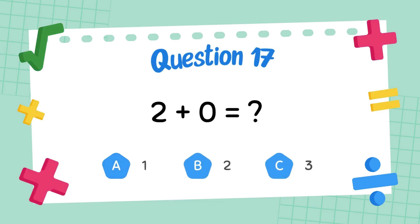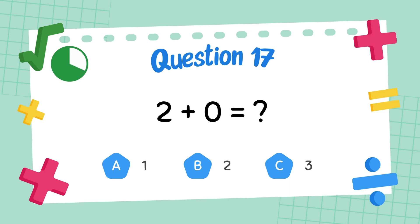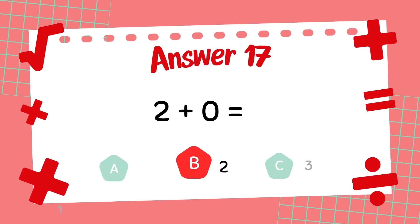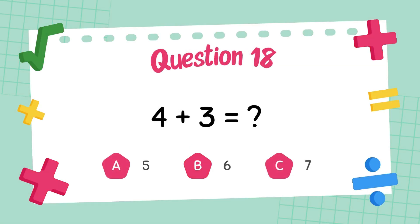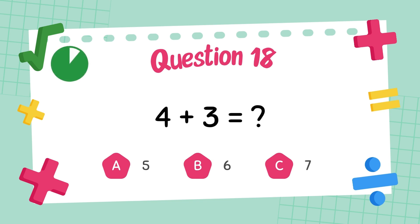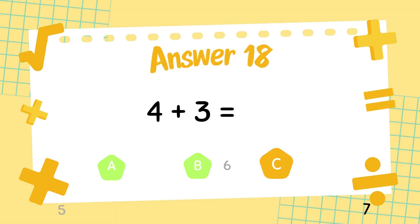What is 2 plus 0? The answer is 2. What is 4 plus 3? The answer is 7.